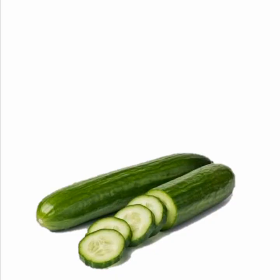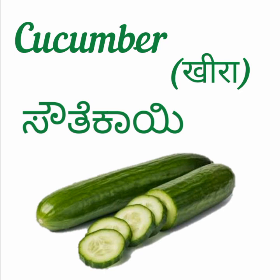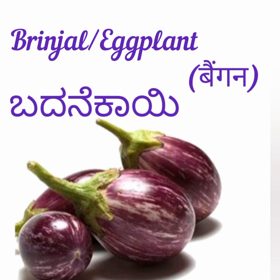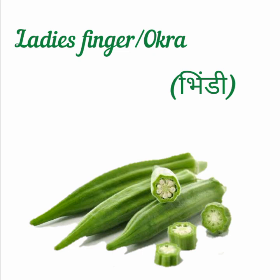First, we will learn the vegetables which end with the word kai. Cucumber — saute kai. Coconut — tengi na kai. Brinjal or eggplant — badanay kai. Lady's finger or okra — benday kai.